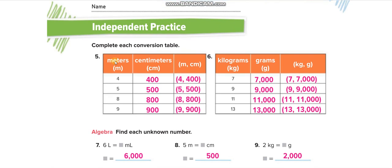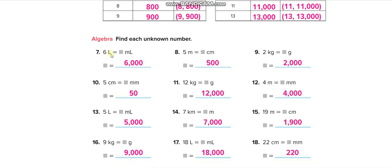Meters to centimeters: multiply by 100. Kilograms to grams: multiply by 1,000. Now solve these: 6 liters — how many milliliters? Multiply by 1,000. 5 meters — how many centimeters? Multiply by 100. 2 kilograms — how many grams? Multiply by 1,000. 5 centimeters — how many millimeters? Multiply by 10. 12 kilograms — multiply by 1,000.